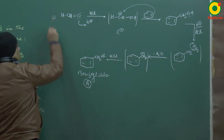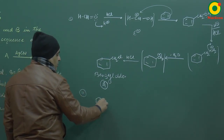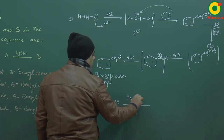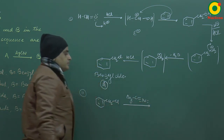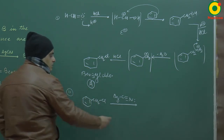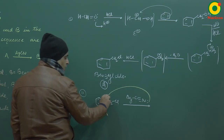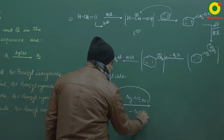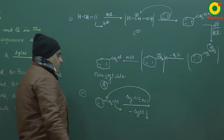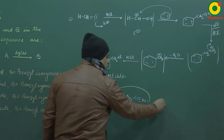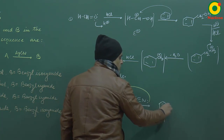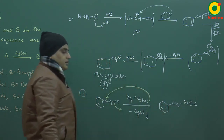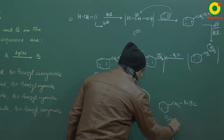Now what is the second reaction? Benzyl chloride on reaction with AgCN. AgCN is a covalent compound, so as a nucleophile it is attacked by C-. Since AgCN is covalent, the carbon end attacks, giving isocyanide. यह हमारा compound B है - Benzyl Isocyanide।